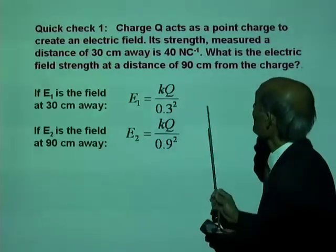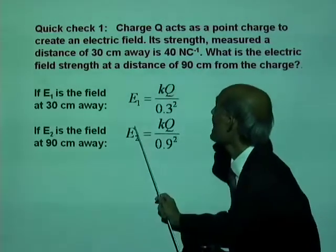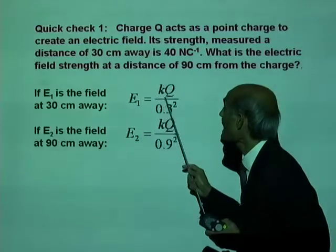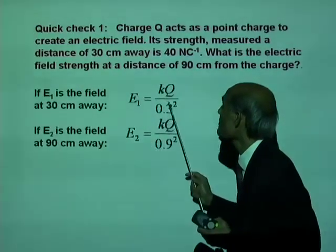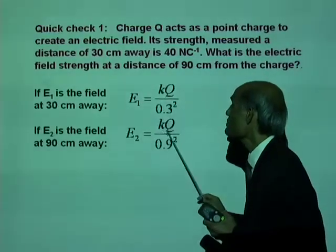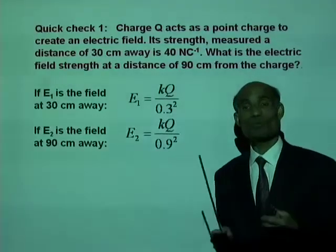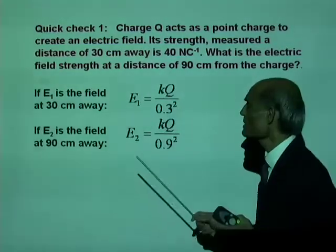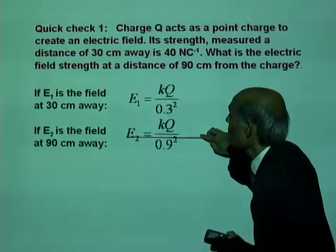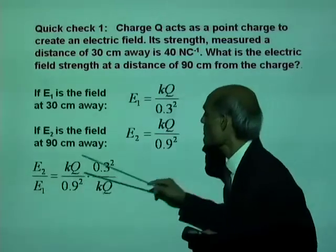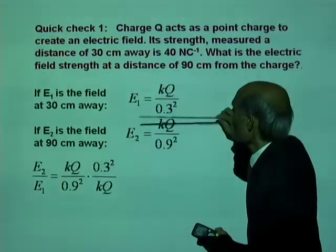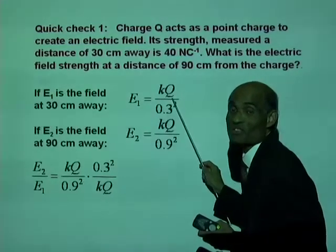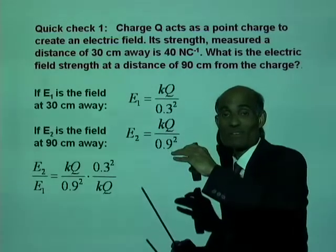Well, what are we supposed to find? We know E1, we need to find E2. Well, you can do it in many ways. You can solve for KQ from there. KQ is E1 times 0.3 squared and put it here in place of this KQ and calculate that E2. That is one way. Another way I'm going to show you is because I want you to practice this mathematical manipulation. Another way is divide this equation by this equation. E2 divided by E1. See that? E2 divided by E1 is this quantity divided by this quantity. You know when you divide by a fraction, you reverse and multiply. Is that right? That's what I've done here.